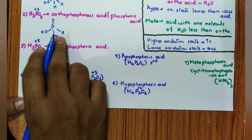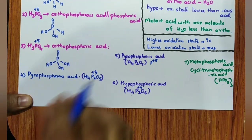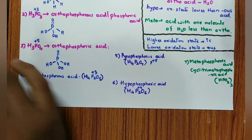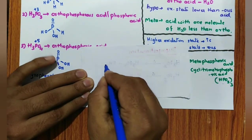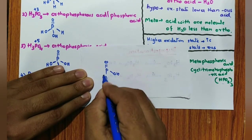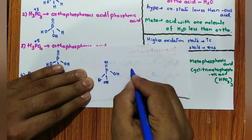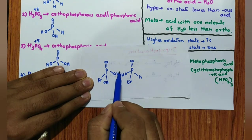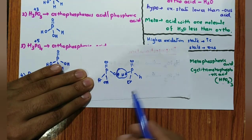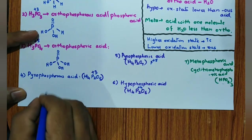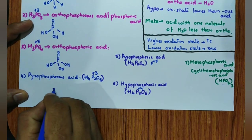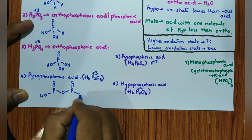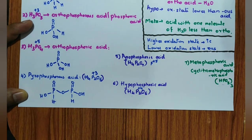Pyrophosphorous acid: obtained by heating orthophosphorous acid. On heating, –OH from one molecule and –H from another are removed as a water molecule. So imagine two orthophosphorous acid molecules written side by side; H₂O is removed, leaving one oxygen bridge between two phosphorus atoms. The structure has P=O on each side, one oxygen bridge, and the remaining –OH and –H groups on each phosphorus.